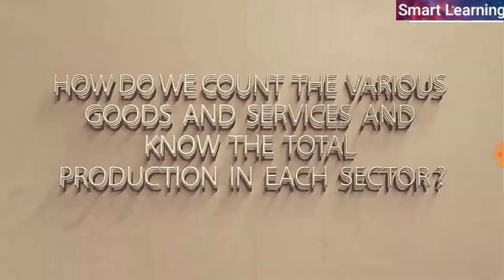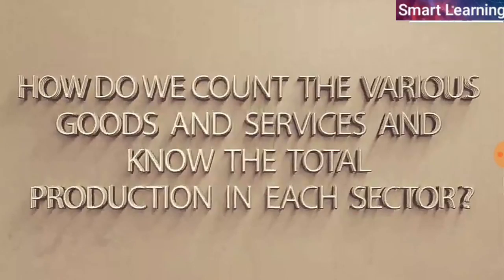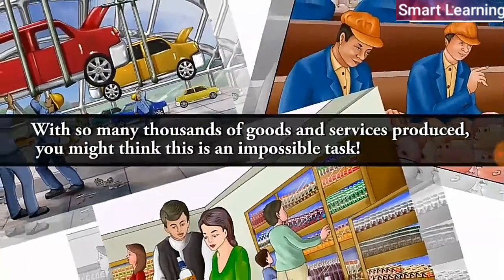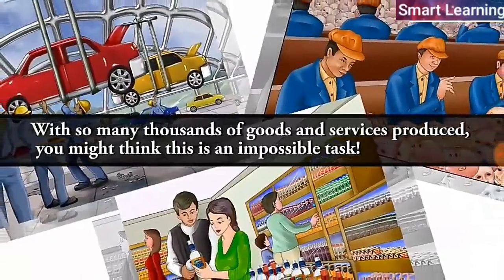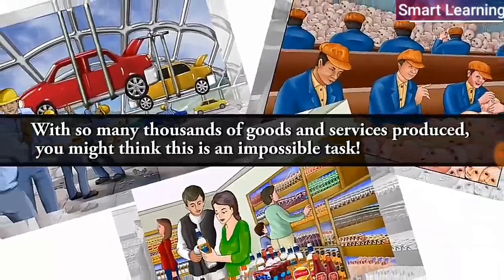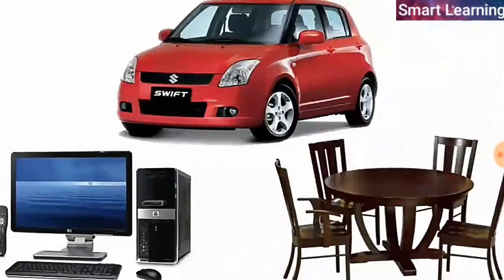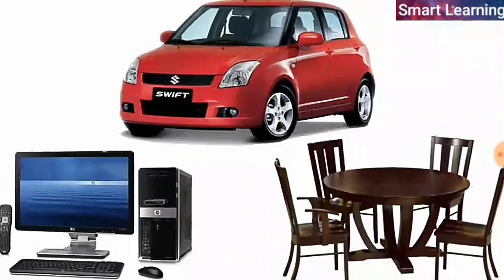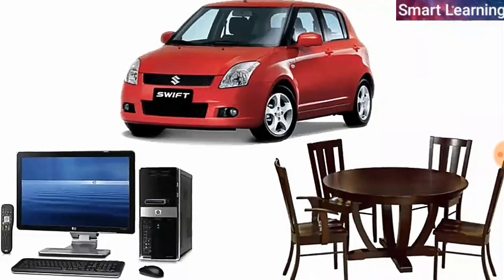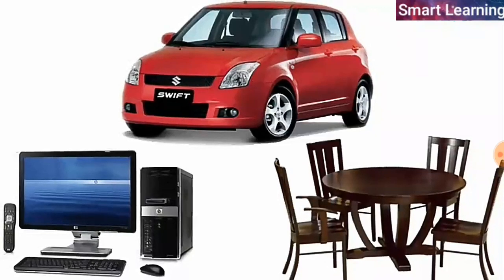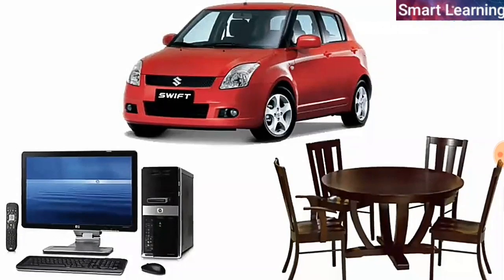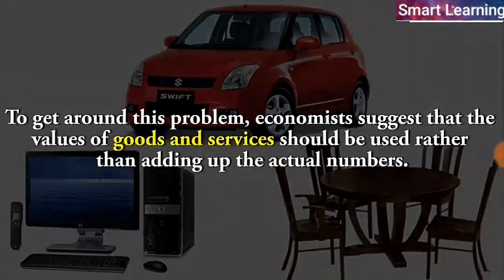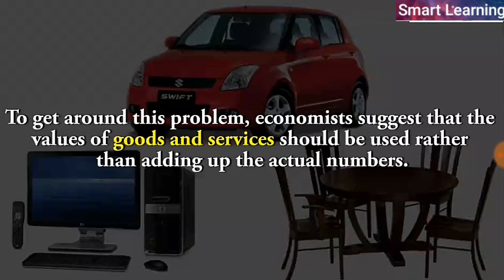How do we count the various goods and services and know the total production in each sector? With so many thousands of goods and services produced, you might think this is an impossible task. Not only would the task be enormous, you might also wonder how we can add up cars and computers and nails and furniture — it won't make sense. To get around this problem, economists suggest that the values of goods and services should be used rather than adding up the actual numbers.